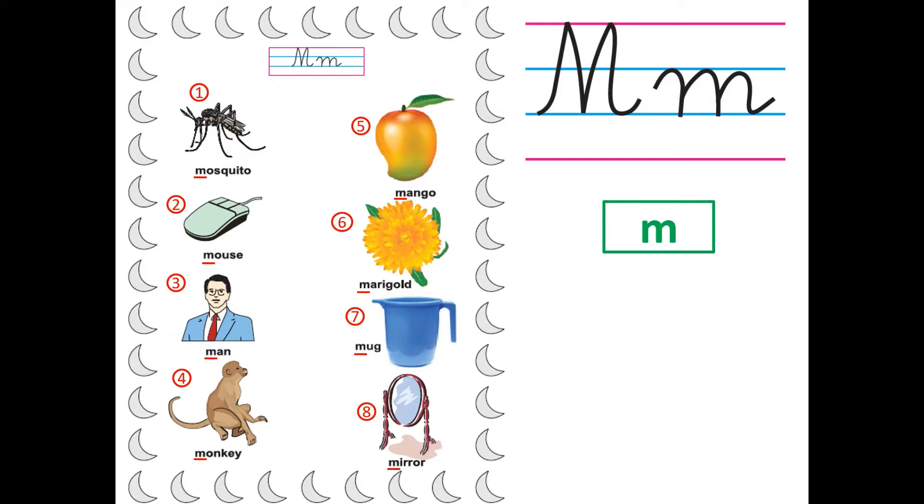And on the border you will see the moon. M-ma-moon. This shape of the moon is crescent. Okay? Take care, bye-bye!